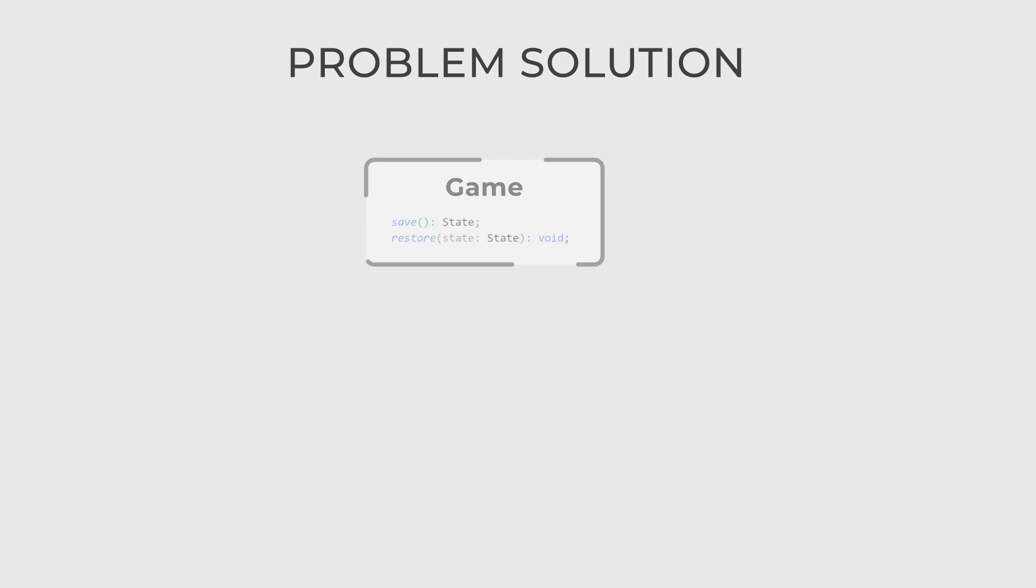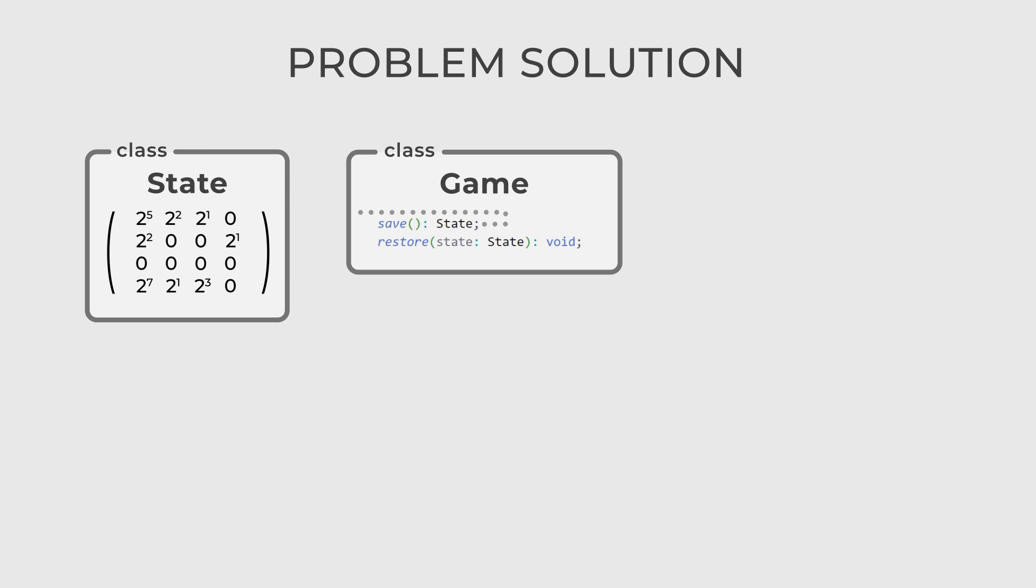Let's add save and restore functions into our game class. The save function returns a state object containing all information about the game's current state. The restore function takes this state and restores the game to that state.